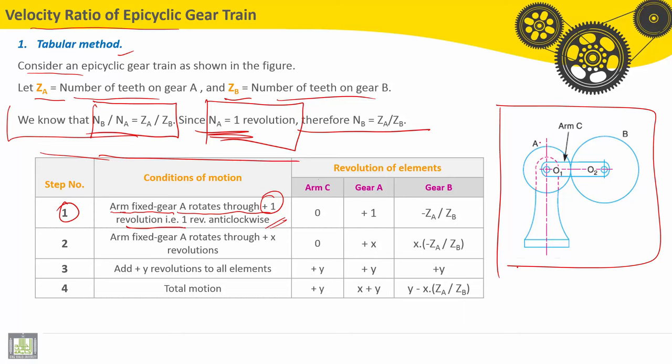A makes one revolution anti-clockwise, it is plus one. Then the velocity of gear B is minus ZA divided by ZB because it will be in the clockwise direction. Arm is fixed, that means velocity is equal to zero.